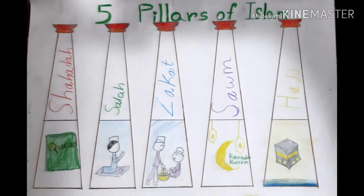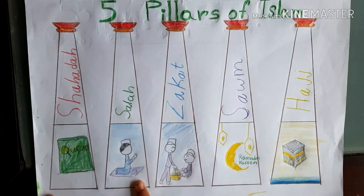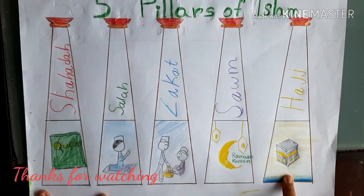Now let's do it again. The five pillars of Islam are Shahada, Salah, Zakat, Sawm, and Hajj.